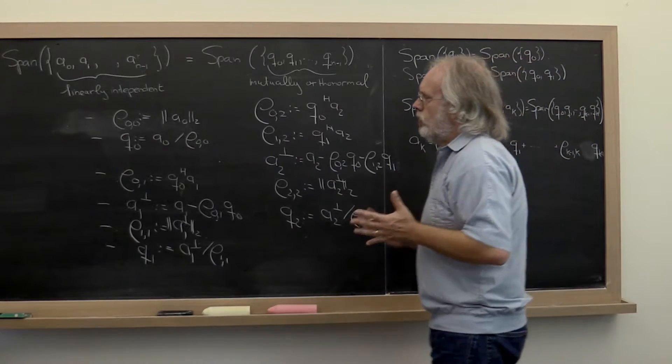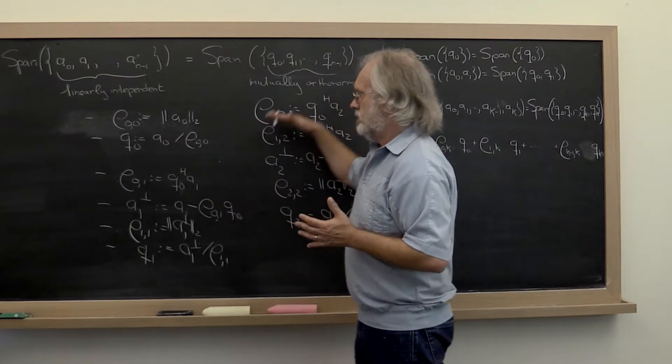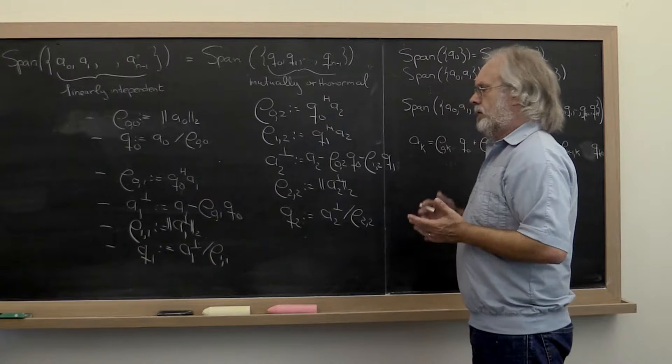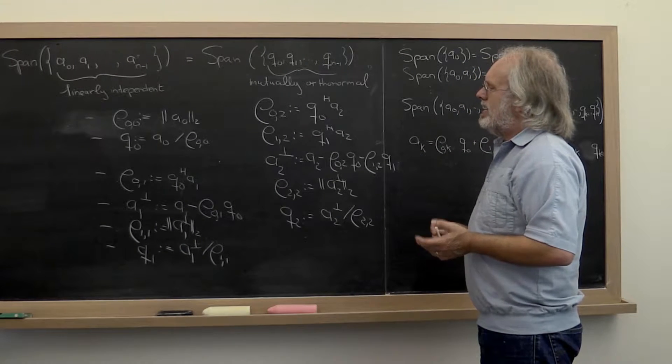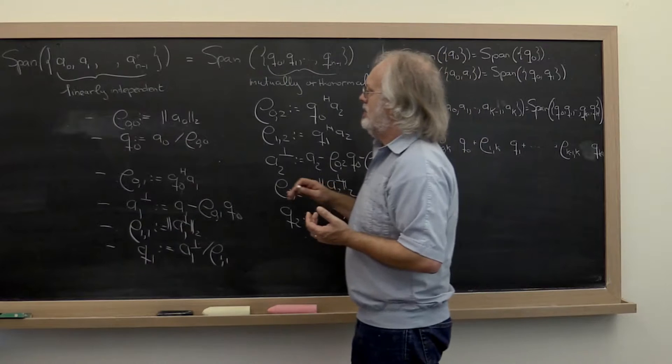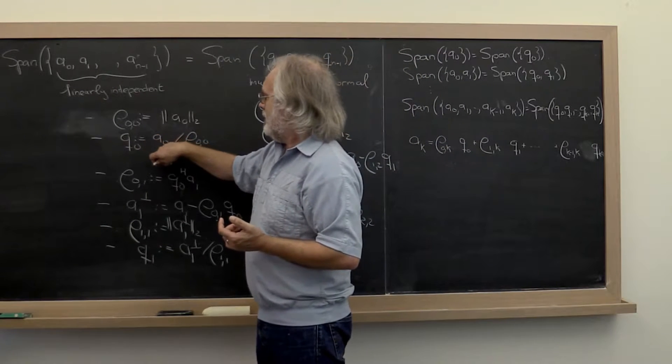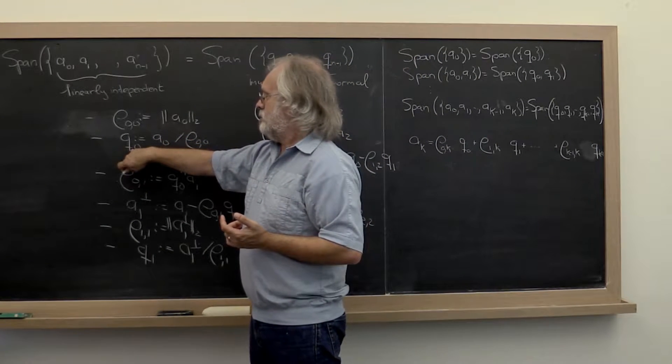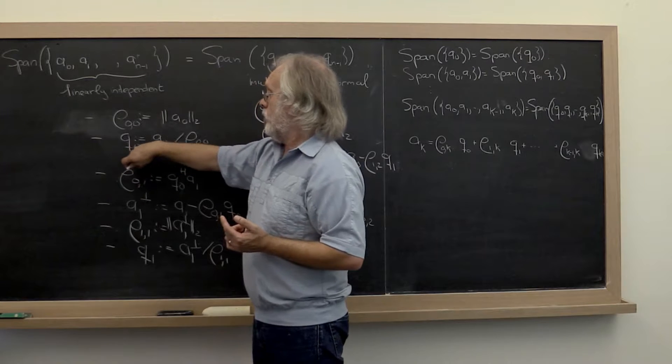So if you look at the Gram-Schmidt orthogonalization process, then what you notice is that really the span of A0 is the same as the span of Q0. Why? They point in the same direction.